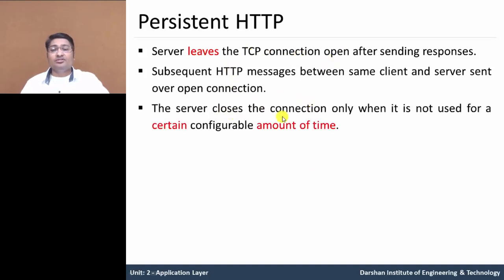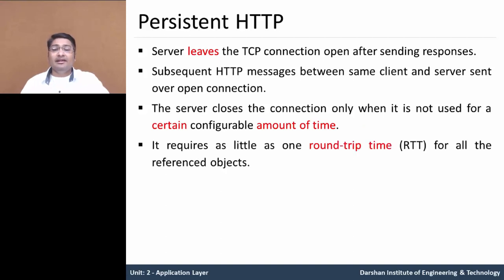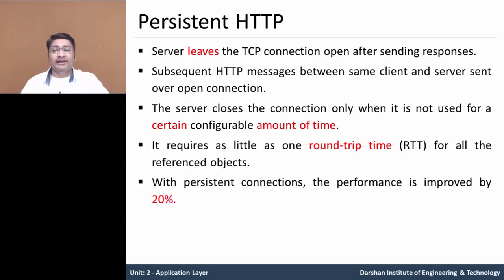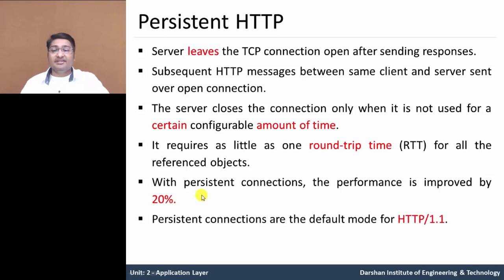The server closes the connection only when it is not used for a certain configurable amount of time — after that timeout, the connection will be closed. It requires as little as one round trip time for all referenced objects. So in persistent connection, performance is improved by 20%. Persistent connection is the default mode for HTTP version 1.1.